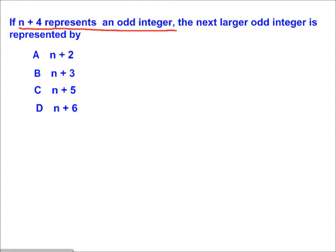In this problem, we know that n+4 represents an odd integer. We're going to use the example where n+4 equals the odd integer 5.